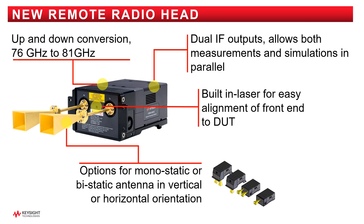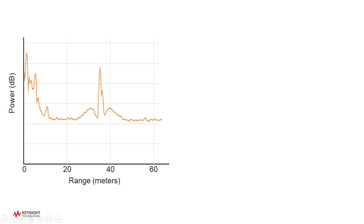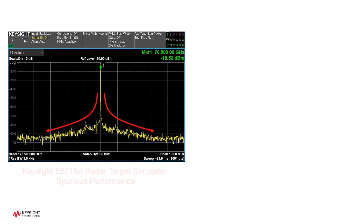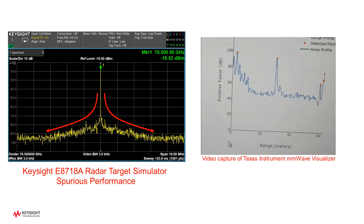Now let's take a look at one advantage in performance of the new remote head. A customer came to us with this issue, where a false target was detected off the main target signal. Upon further analysis, we identified the front end of their target simulator had spikes of spurious emissions. Here, we introduced the new Keysight Radar Target Simulator, and before doing so, measured the performance of the new remote front end. As you can see, it has a reduced spurious emission.